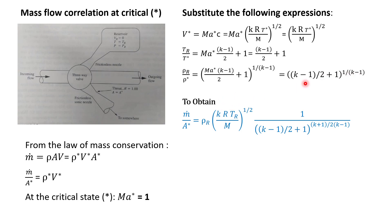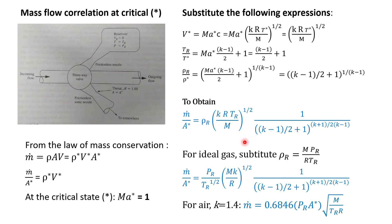To get the density, we use the density equation linking the reservoir and the critical point at Mach number equal to 1, which simplifies the equation. By substituting all three equations into the main equation, you end up with the combined result. Then, because we assume ideal gas behavior, we substitute the term P_R. Using this equation, you end up with the final equation. This equation gives the ratio of mass flux — mass divided by the area at the critical condition — relative to the reservoir temperature. You can always simplify for air by substituting k equal to 1.4 to get a much simpler equation.